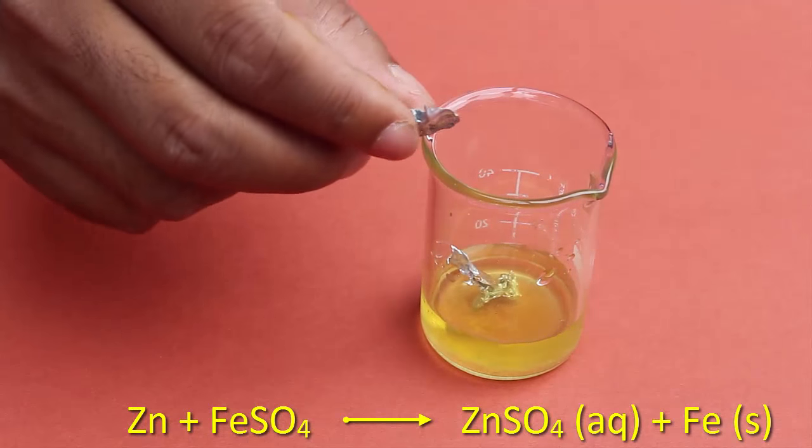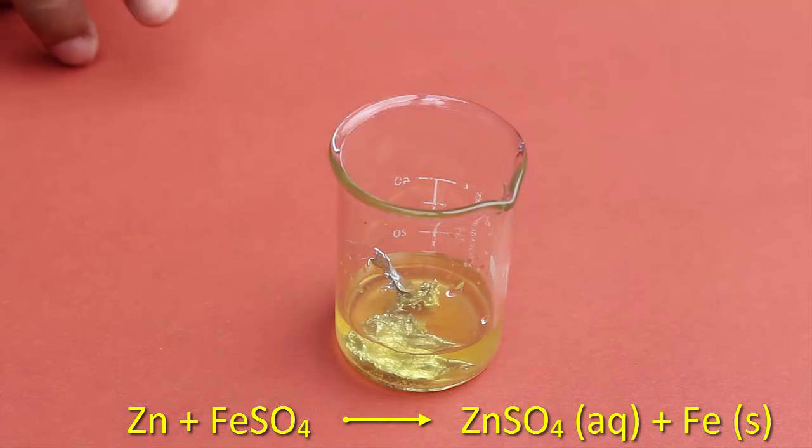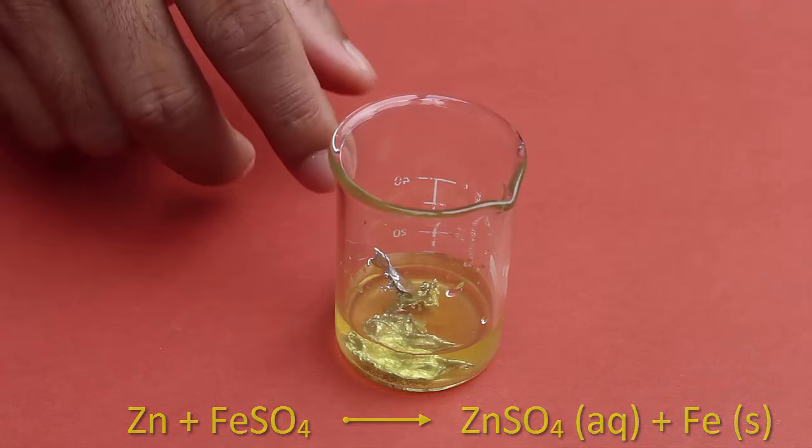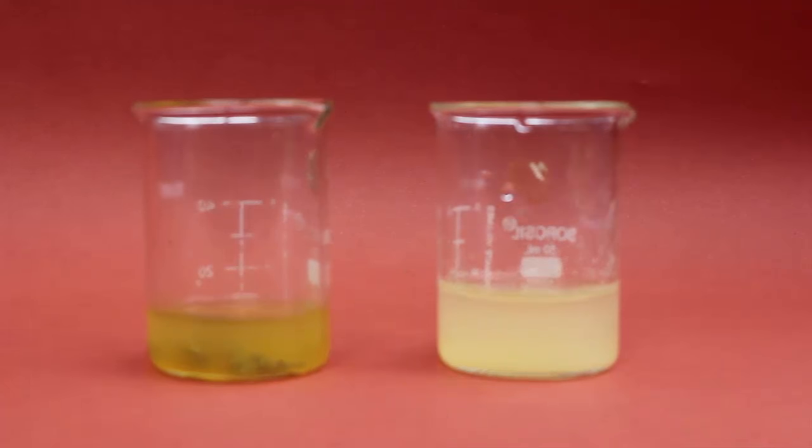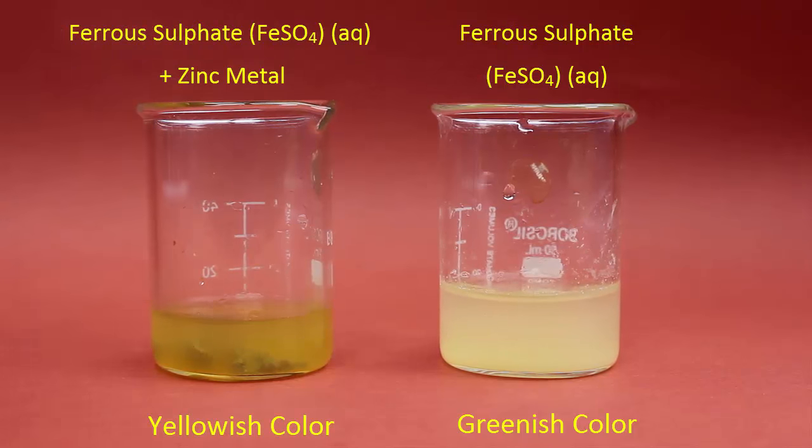So we are adding two pieces of zinc metal into the solution. The reaction will start but this reaction will take little time to complete. Now we can see the difference between the color of the solution.